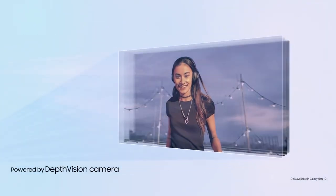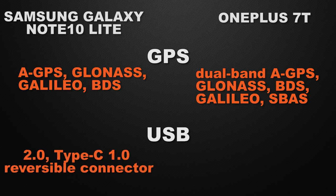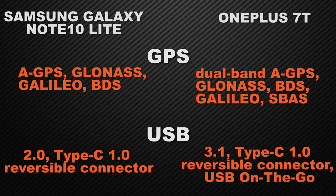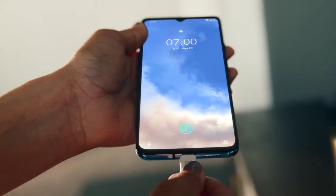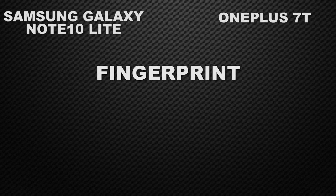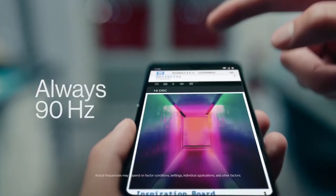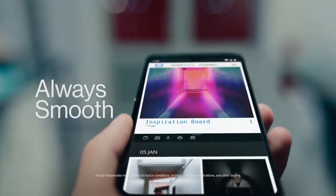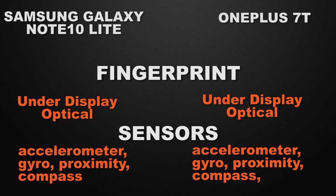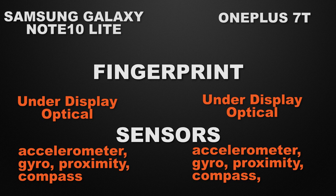Let's talk about the USB of the devices. Note 10 Lite comes with USB 2.0 Type-C connector and OnePlus 7T comes with USB 3.1 Type-C connector, so the winner is OnePlus 7T. Let's talk about the fingerprint scanner: both devices come with under-display optical fingerprint scanners, so there is a tie. In the sensor department, both come with accelerometer, gyroscope, proximity sensor, and compass, so again it's a tie between them.